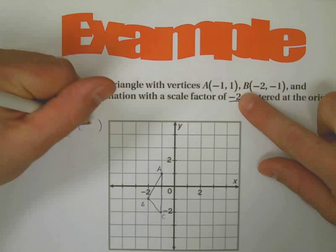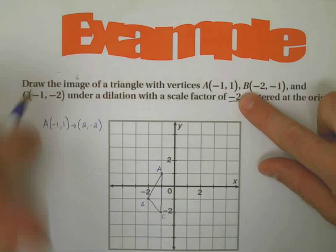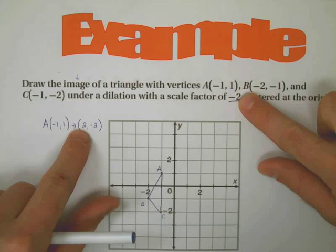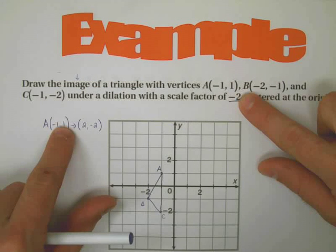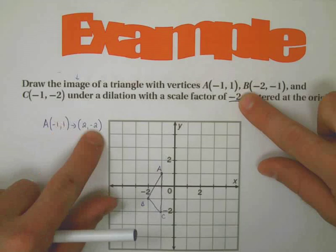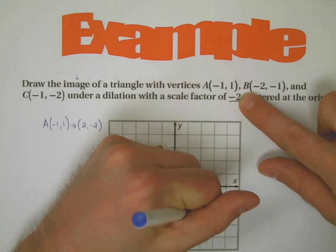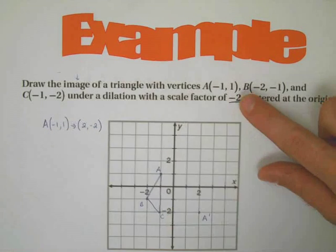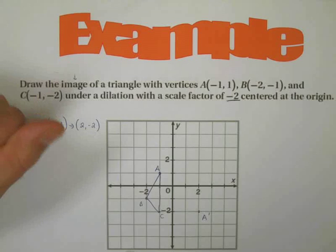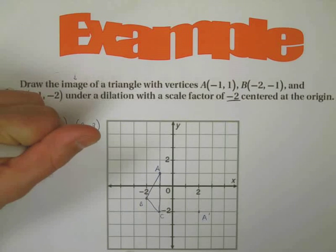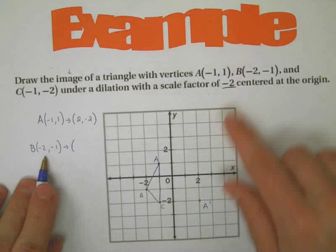The new A value is going to be at positive two, negative two, because negative one times negative two is positive two, positive one times negative two is negative two. So two, negative two, here's my new A prime.